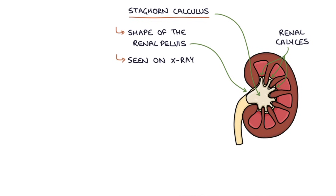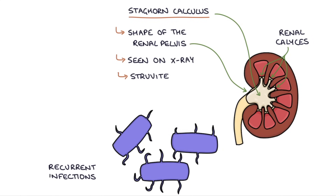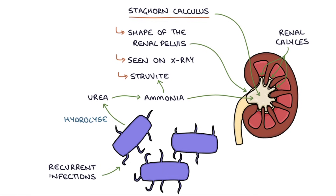Most commonly, staghorn calculi occur with stones made of struvite. In patients with recurrent upper urinary tract infections, the bacteria can hydrolyze the urea found in the urine into ammonia, and this creates the solid struvite.